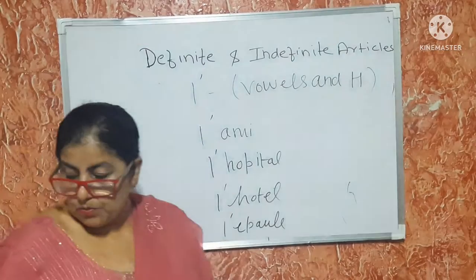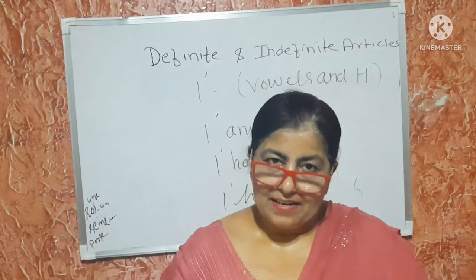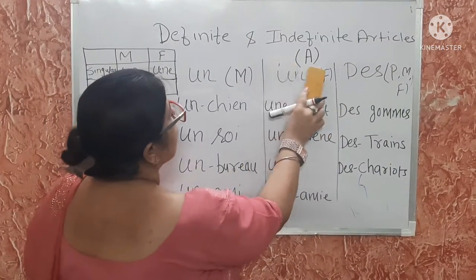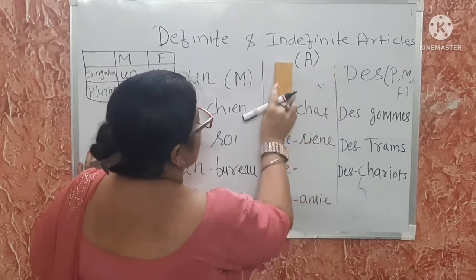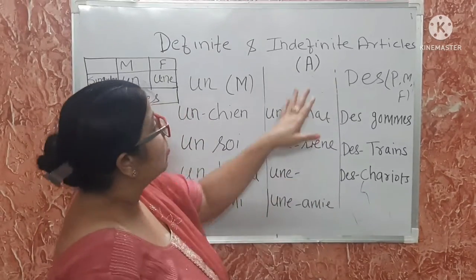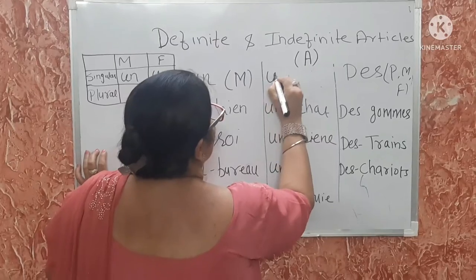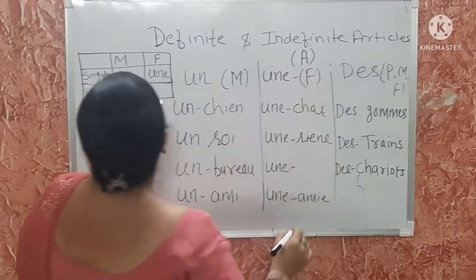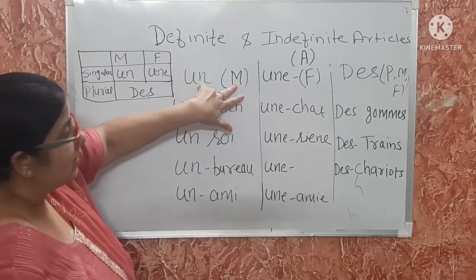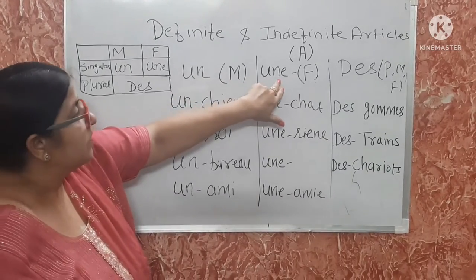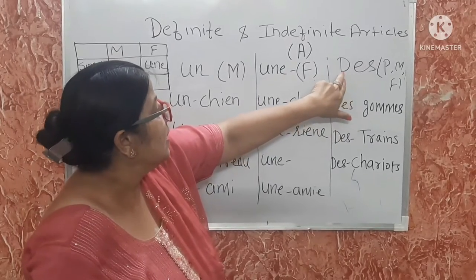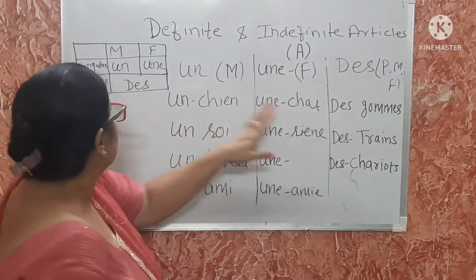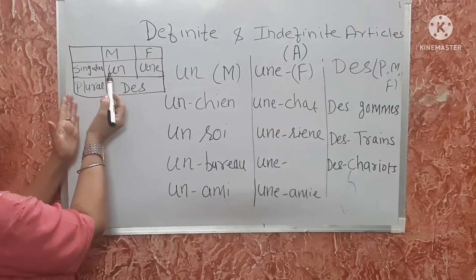Now we will do indefinite articles. These are indefinite articles used in French, corresponding to 'a' in English. Un is used with masculine, une is used with feminine, and des is used with plurals in both masculine and feminine.